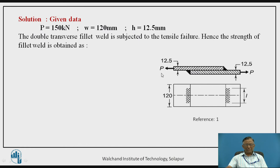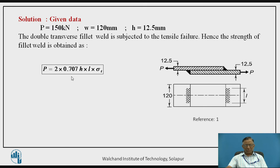To obtain the solution, the data is given: load is given, width of the plate is given, and size of the weld equals the thickness of the plate, so H = 12.5 mm. This transverse fillet weld is subjected to tensile failure, so we consider the tensile strength of the welded joint. The failure area is the throat area, taken as 0.707 × H × L. There are two such welds, so total failure area is 2 × 0.707 × H × L, multiplied by allowable tensile stress. This gives the strength of this welded joint.